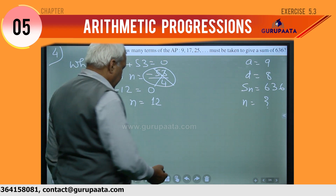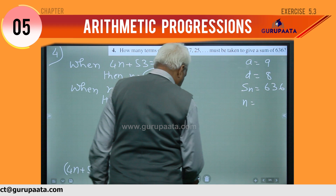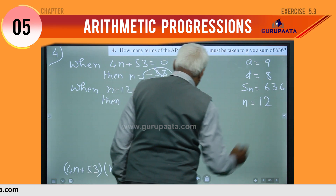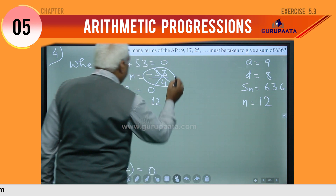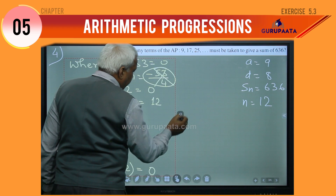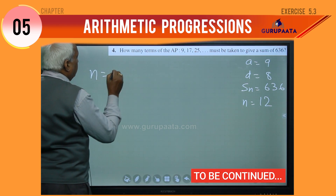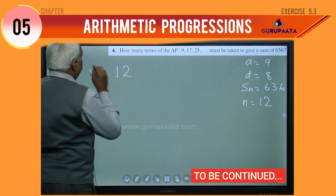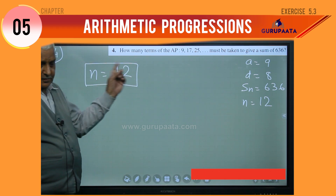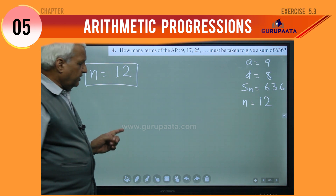So we will write here n equal to 12. I will clear the board and once again write the answer: n equal to 12. This is the answer for question number 4. Now we will see the next question, that is question number 5.